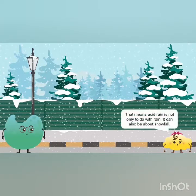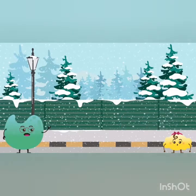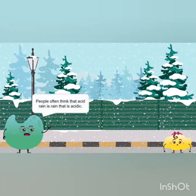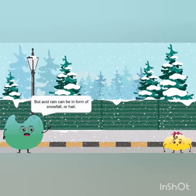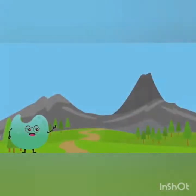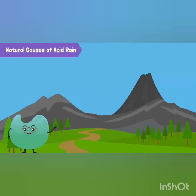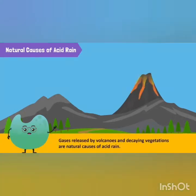Acid rain does not only refer to rain — it also includes snowfall and hail. People often think it's only rain that is acidic, but acid rain can take the form of snowfall or hail. Human activities are a major cause of acid rain, but sometimes acid rain can also be natural. Volcanoes also release some of the gases that cause acid rain.